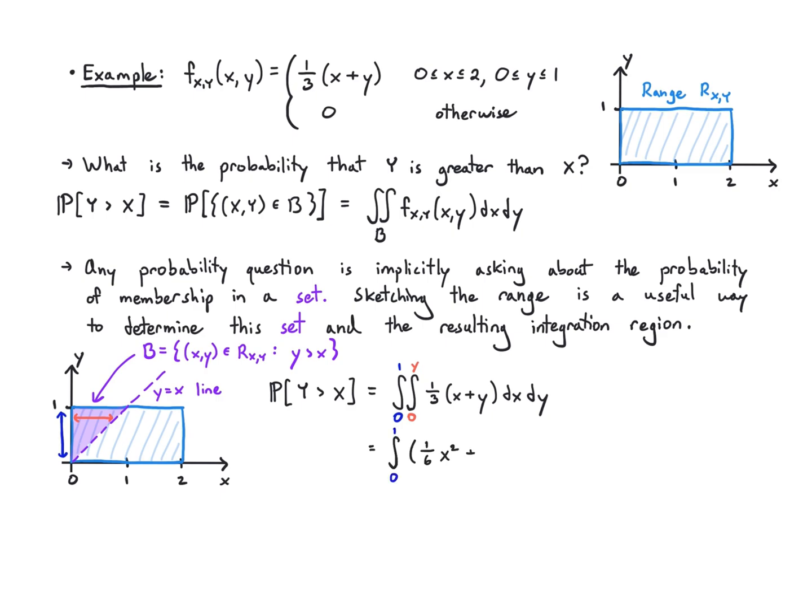I'm going to go ahead and evaluate this integral just so we see what the value is. I've evaluated the x part, now I'm evaluating the y part. I get one-sixth times y cubed from 0 to 1, and that's one-sixth. That's something that's actually kind of hard to visualize here because the piece of the range that we've picked up is a fourth of the range, but because the joint PDF height is not flat—it varies with respect to x and y—it's actually less than a fourth in probability.